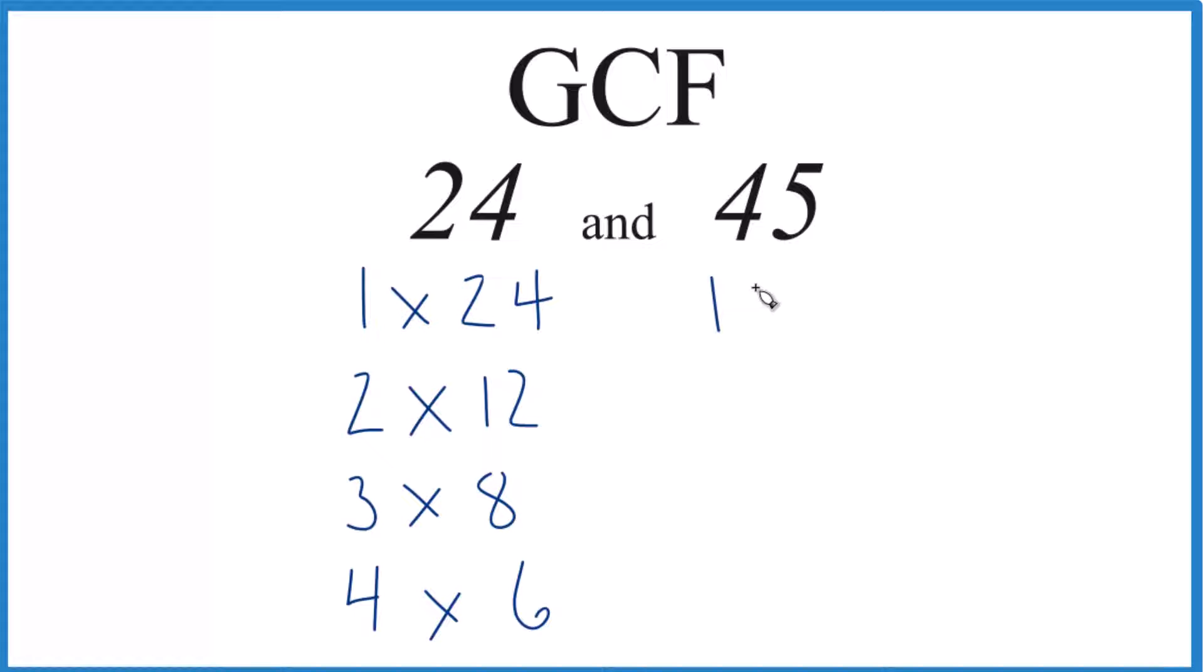For 45, let's see, 1 times 45, that equals 45. 3 times 15 is 45, and then 5 times 9, that's 45. So we have the factors here.